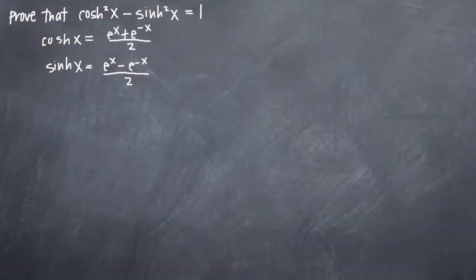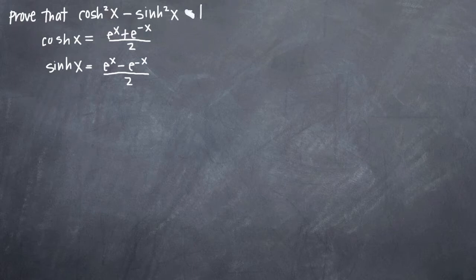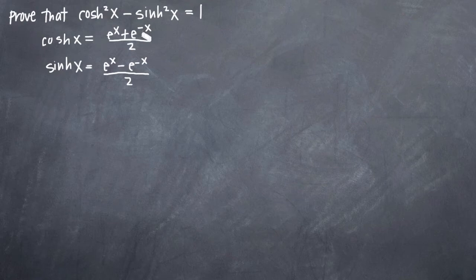In this particular problem, we've been asked to use hyperbolic identities to prove that hyperbolic cosine squared of x minus hyperbolic sine squared of x is equal to 1. Because those are the two hyperbolic functions given in our problem, I've written out the formula or identity for each one. So what we're going to do is plug in the identity for each one and then simplify as much as we can.